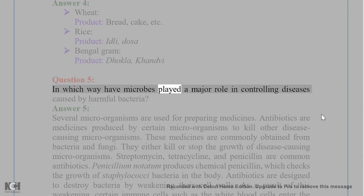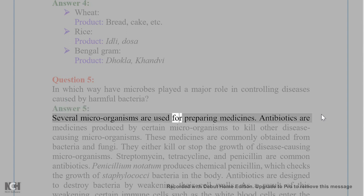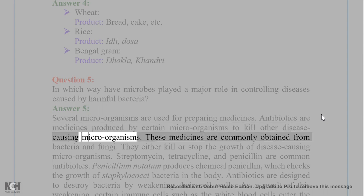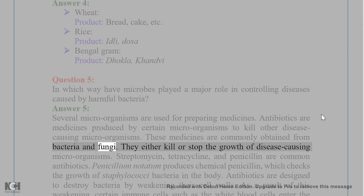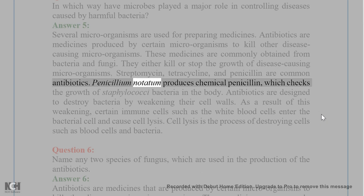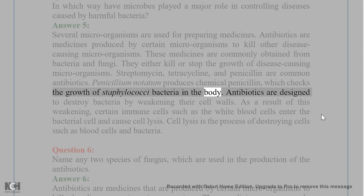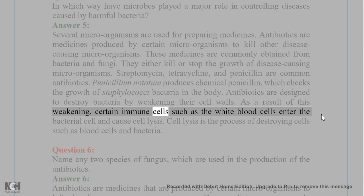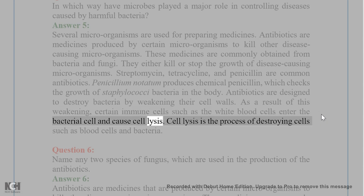Question 5. In which way have microbes played a major role in controlling diseases caused by harmful bacteria? Answer 5. Several microorganisms are used for preparing medicines. Antibiotics are medicines produced by certain microorganisms to kill other disease-causing microorganisms. These medicines are commonly obtained from bacteria and fungi. They either kill or stop the growth of disease-causing microorganisms. Streptomycin, tetracycline, and penicillin are common antibiotics. Penicillium notatum produces the chemical penicillin, which checks the growth of Staphylococci bacteria in the body. Antibiotics destroy bacteria by weakening their cell walls, allowing immune cells such as white blood cells to enter and cause cell lysis — the process of destroying cells such as blood cells and bacteria.